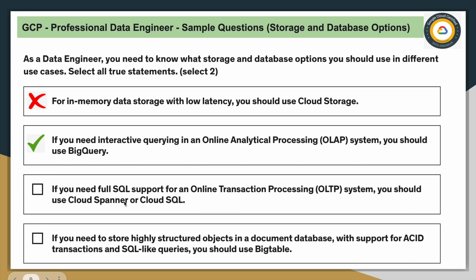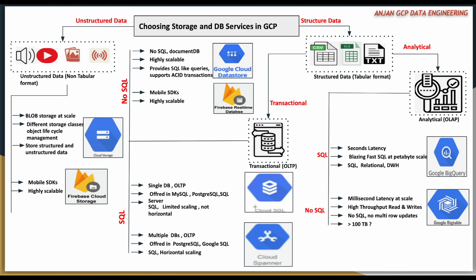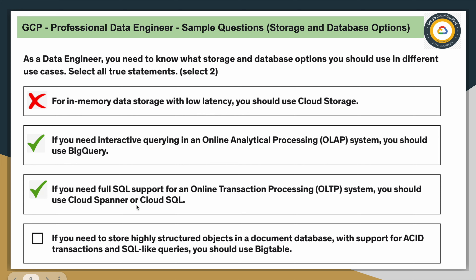Option three: if you need full SQL support for an online transaction processing (OLTP) system, you should use Cloud Spanner or Cloud SQL. Both are relational databases that are completely suited for OLTP use cases. Going back to the diagram, under structured data transactional use cases you can use full SQL capability. They have clearly mentioned full SQL support, so this is a correct option.